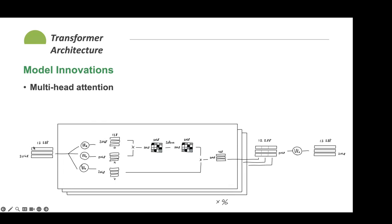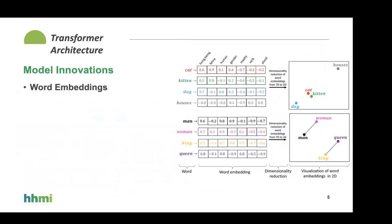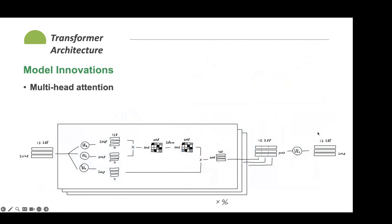I should mention how we get word embeddings. Each word in the vocabulary is assigned a number — for example, 'cat' might be index 128. That number indexes into a word embedding table of size vocabulary-size-by-D. The feature representation of every word is trained alongside everything else, so this is also a large matrix that needs to be trained.